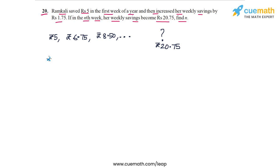So we have to go from Rs. 5 to Rs. 20.75 and this is a difference of plus Rs. 15.75. And every week the weekly savings increase by Rs. 1.75. So Rs. 1.75 per week is the increase in savings that happens every week.